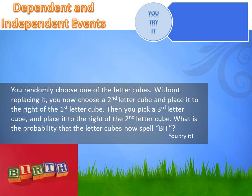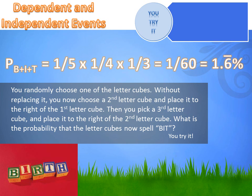You've got five different letter cubes spelling B-I-R-T-H. You're going to reach into a bag and pick one at a time. We want to figure out the odds that you first pick a B, then an I, and on the third draw a T. Would these be independent or dependent events? We're not replacing the letters — after drawing the first letter, only four remain. So the odds of drawing an I on the second draw are affected by having drawn and kept the B. These are dependent events.